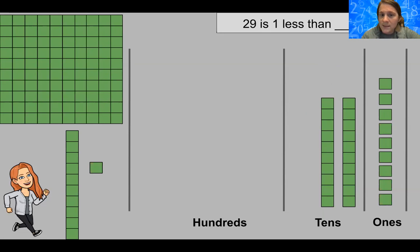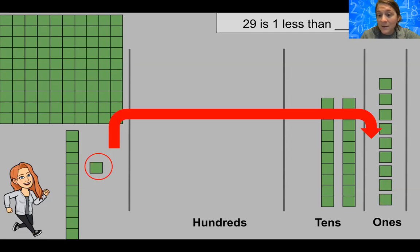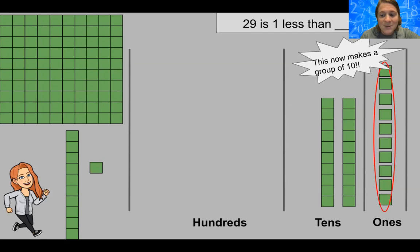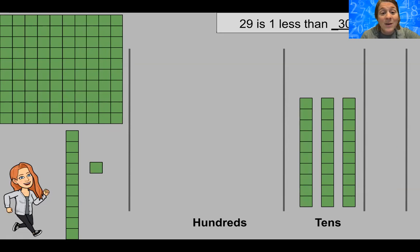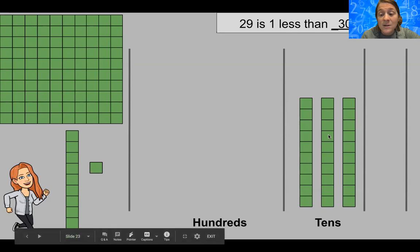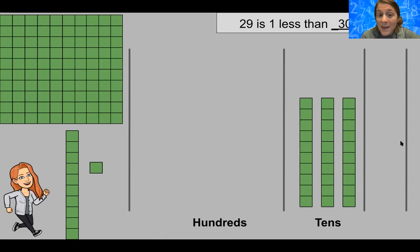Next: '29 is one less than what?' It's telling us there's a number bigger than 29 — 29 is one less than this number. So we need to add one in. When we bring it over, there are going to be 10 ones in the ones column, and we can't have 10 ones there — we have to take them over to the tens place value. So 29 is one less than 30.